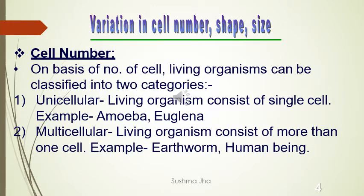On the basis of number of cells, organisms can be classified into two categories. First is unicellular organisms — living organisms that consist of only one single cell. Uni means one, cellular means cell. So an organism having one cell is known as unicellular. Examples are amoeba, euglena, etc.